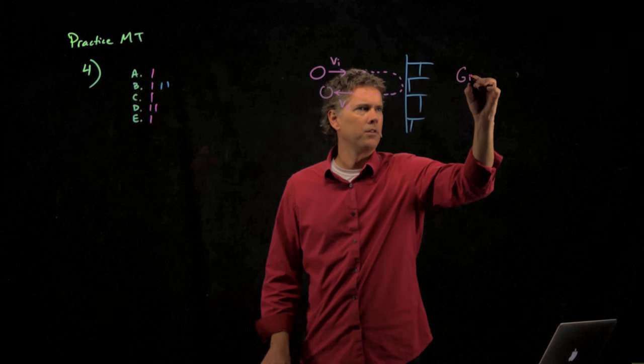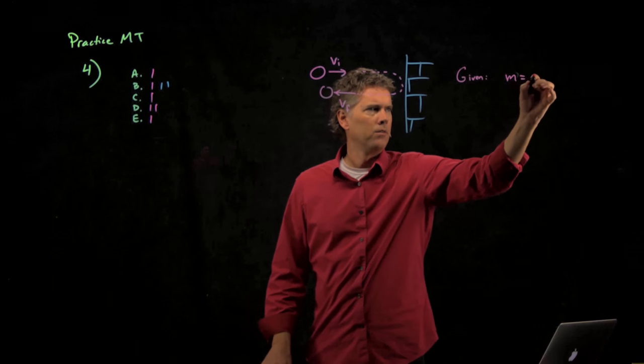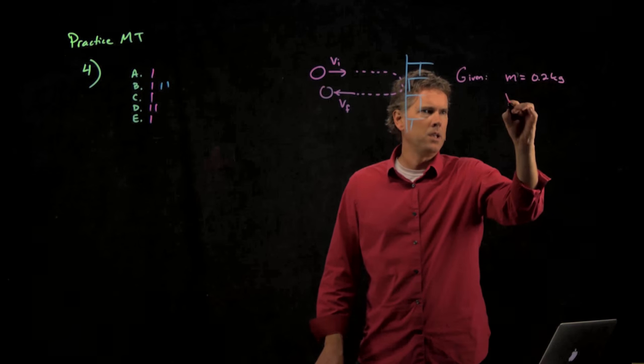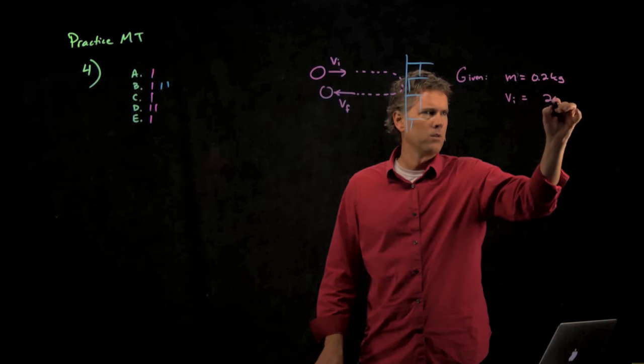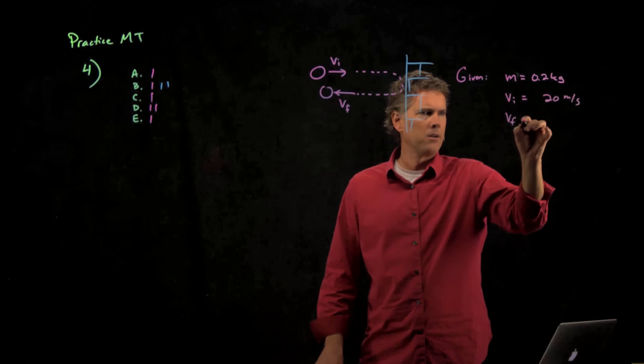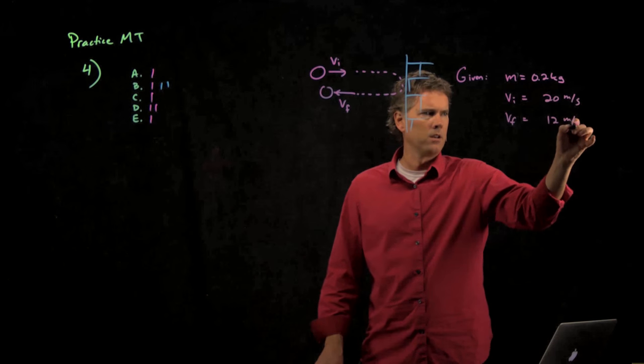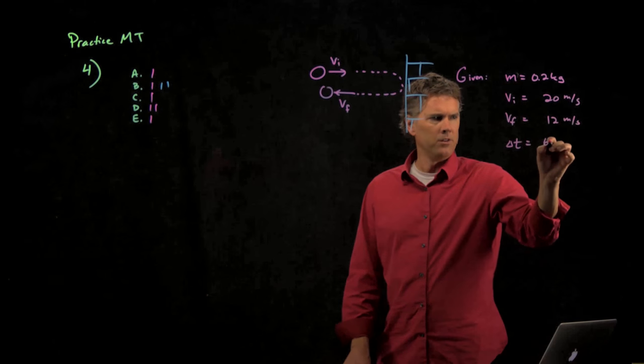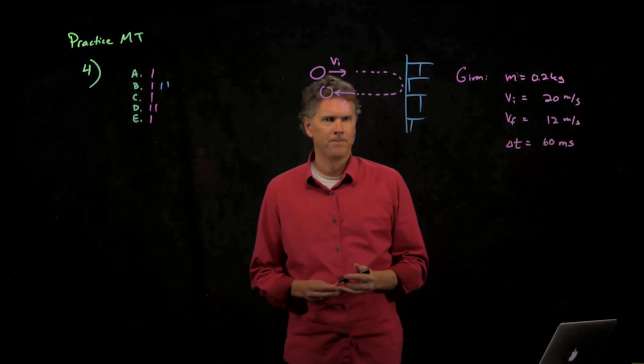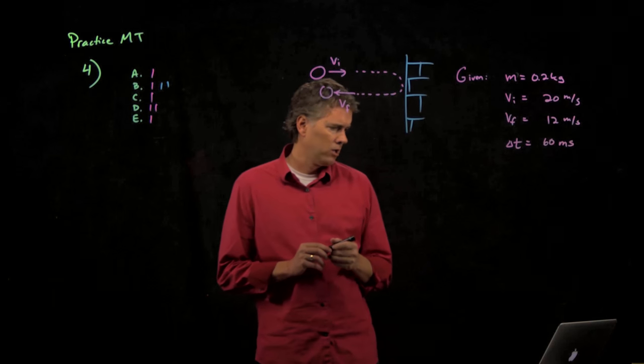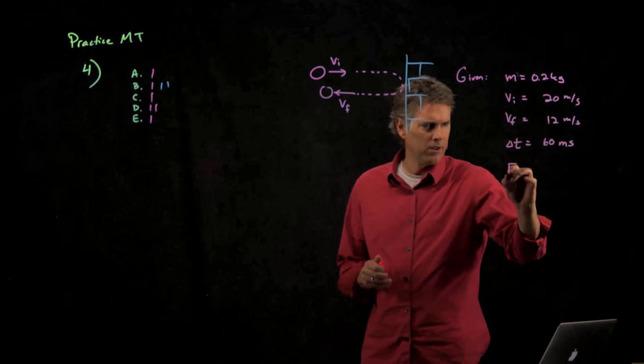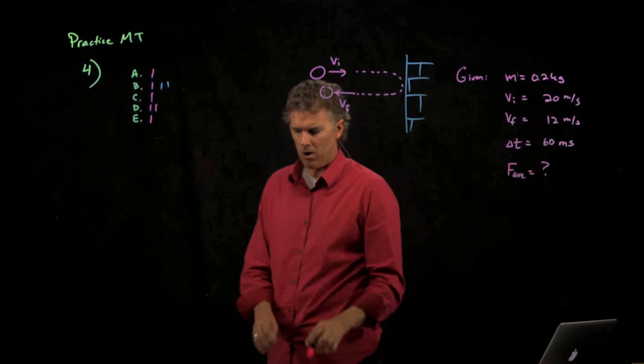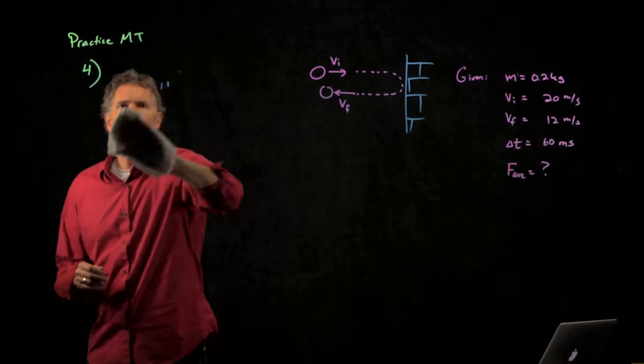They give us a few things. They give us the mass of the ball, 0.2 kilograms. They give us the speed going in, 20 meters per second, the speed coming out, 12 meters per second. And they also give us delta T, which is 60 milliseconds. And we are looking for the average force exerted by the wall on the ball.